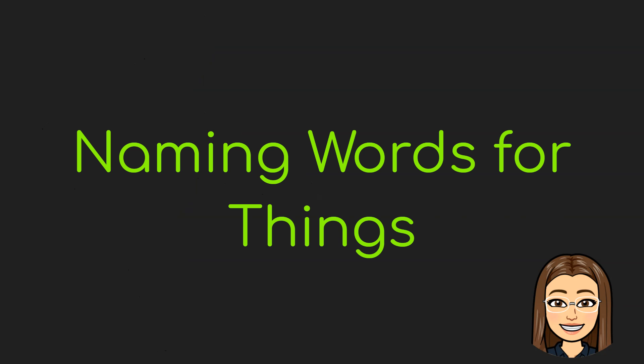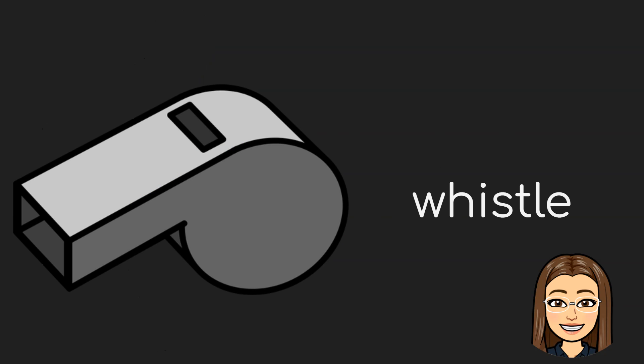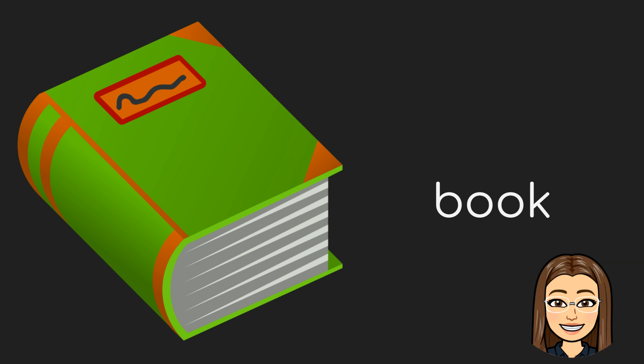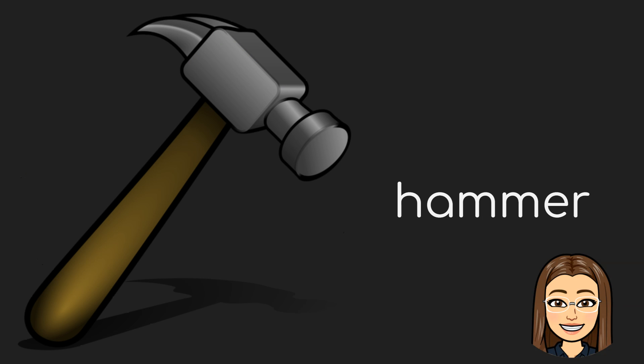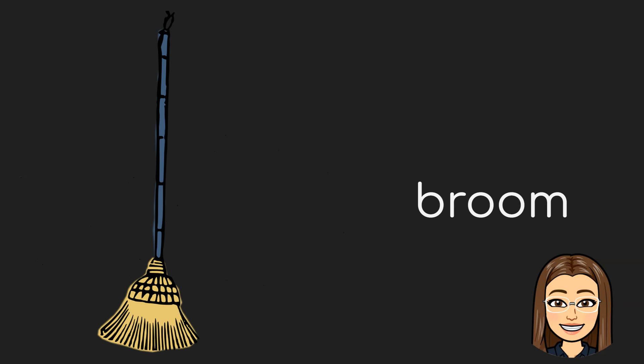Next, let's have naming words for things. First, we have here a whistle. A book. A hammer. And a broom.